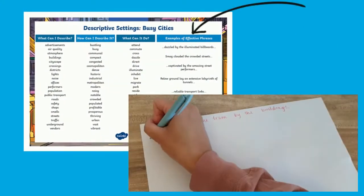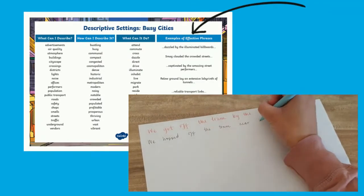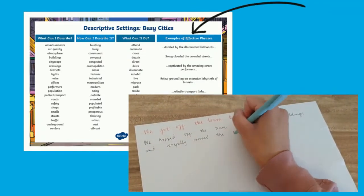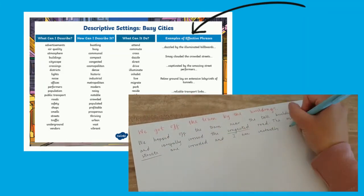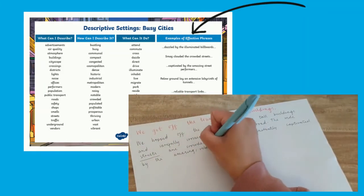These are fantastic if you're teaching a topic which involves writing about a certain setting, as specific keywords are noted. You'll even find examples of effective phrases to inspire your children's writing and prompt their creative ideas.